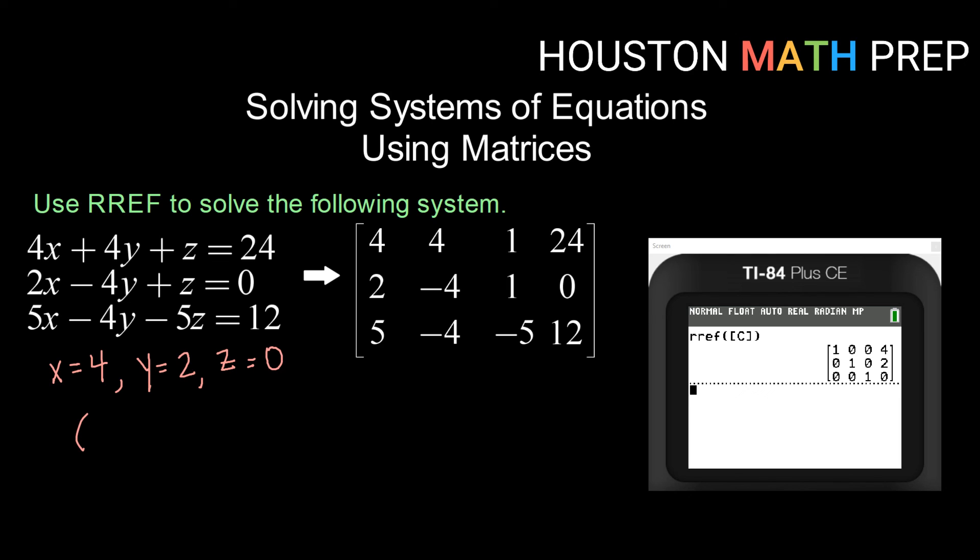All right, so when we write solutions to a three variable system, we write those as an ordered triple x comma y comma z. So our solution would be four, two, zero. All right guys, that does it for this video on more examples of using RREF to solve systems of equations. Until next time, we'll see you later.